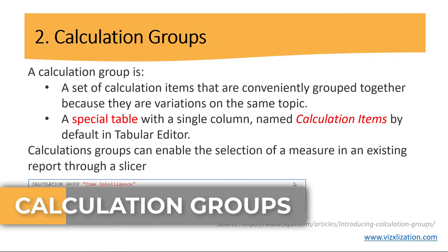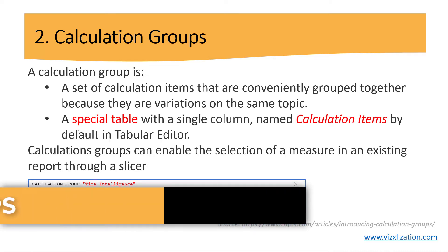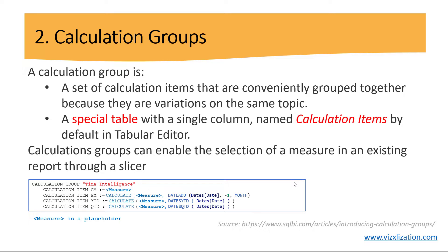So what are calculation groups? A calculation group is a set of calculation items that are conveniently grouped together because there are variations on the same theme — like time intelligence calculations, for example: month-to-date, year-to-date, quarter-to-date, those type of calculations. It's a special table with a single column named calculation items by default in Tabular Editor. Calculation groups can enable the selection of a measure in an existing report through a slicer — basically adding a measure to a slicer, which is impossible without calculation groups.